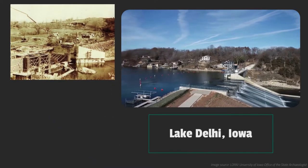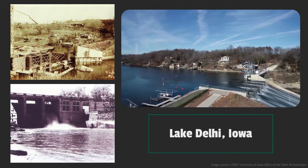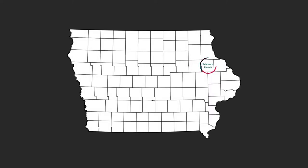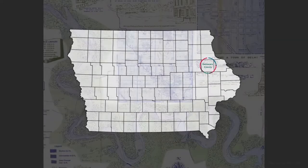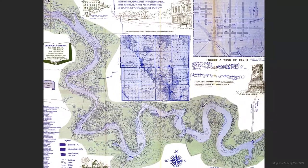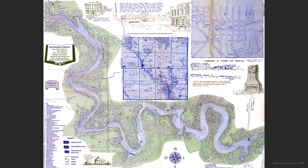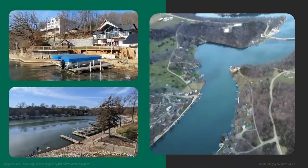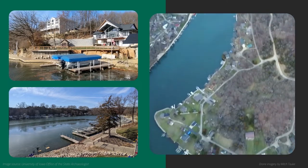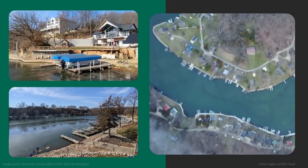Lake Delhi is a man-made lake resulting from a dam built on the Maquoketa River in 1926 to 1927. Located in central Delaware County, Iowa, the lake has approximately 18 miles of shoreline populated with residential homes, seasonal cottages, and some commercial properties. The shoreline ranges from gently sloping lawns to steep banks fortified by riprap or retaining walls to hinder erosion and provide safe access to the lake.